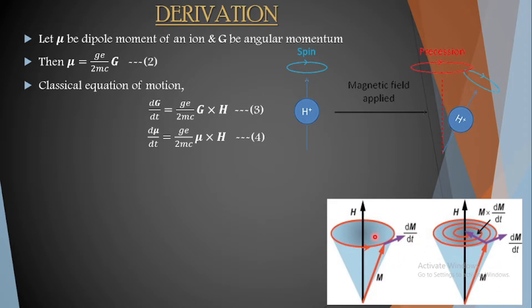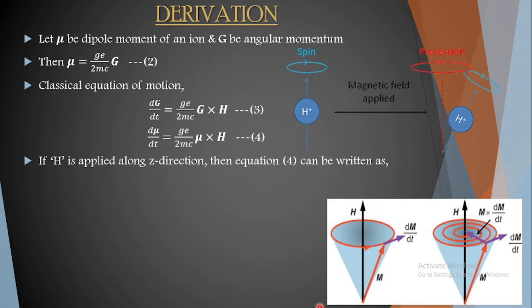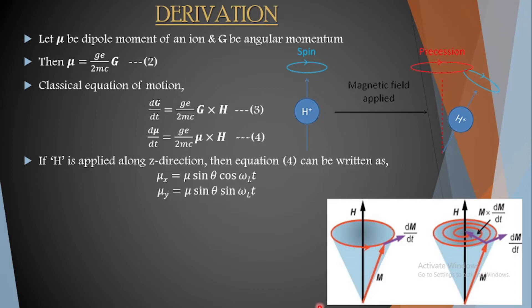If a static field is applied along the z direction, then equation number 4 can be written in terms of components mu_x, mu_y, mu_z. It is similar to polar coordinate equations where you define x, y, z in terms of r, theta, phi — here we express in terms of theta and omega_L times t. So: mu_x = mu sin(theta) cos(omega_L t), mu_y = mu sin(theta) sin(omega_L t), and mu_z = mu cos(theta), which is constant because the magnetic field is applied along z. The component along z remains constant. This set is equation number 5.